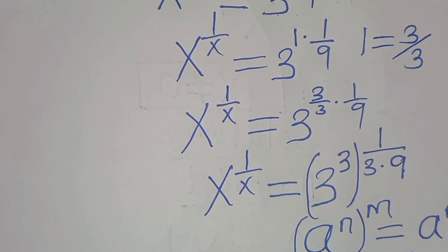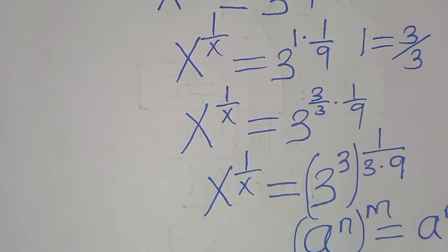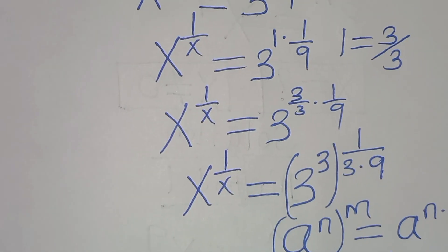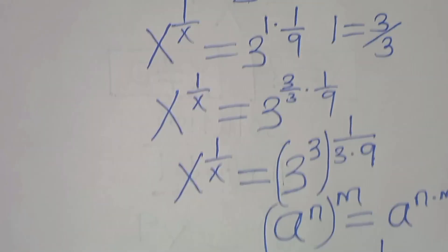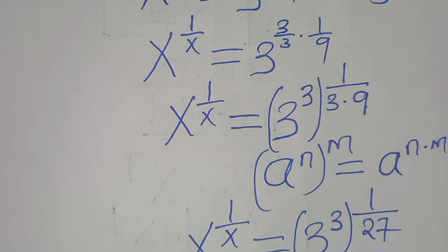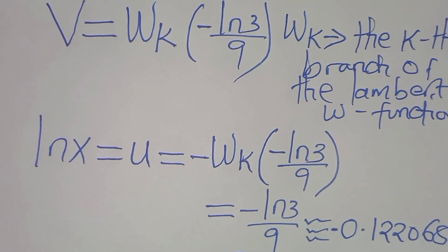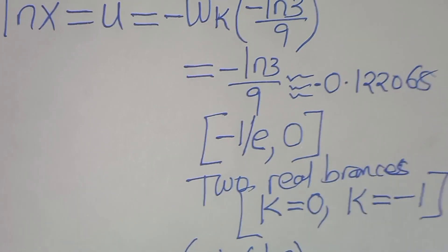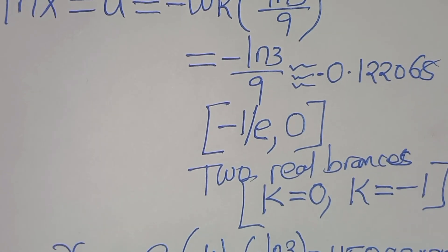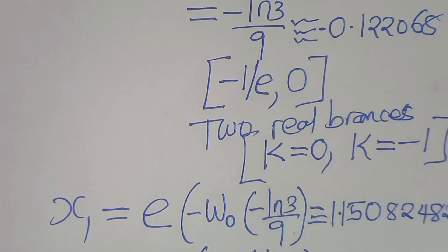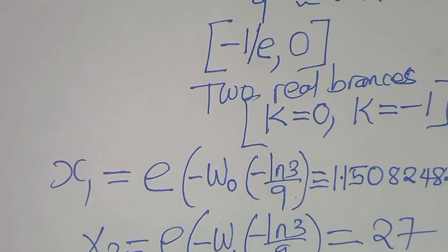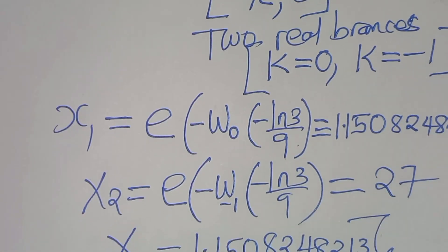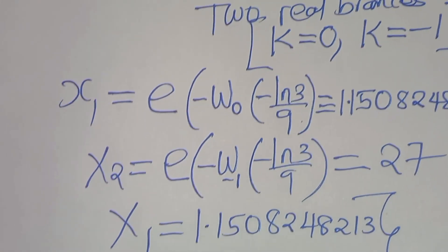So in summary, we have two solutions from method 1: x₁ ≈ 1.1508248213 and x₂ = 27, and method 2 confirms x = 27. Please like this video and subscribe. See you in the next video.